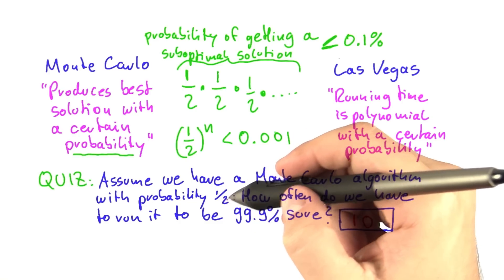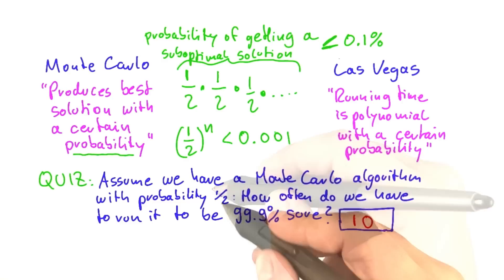Now, of course, for an NP-complete problem, it's very unlikely that we get a probability like this.